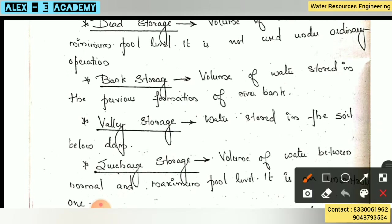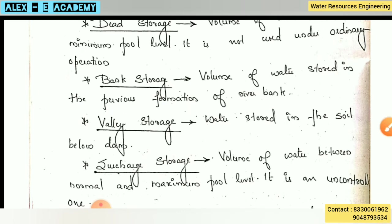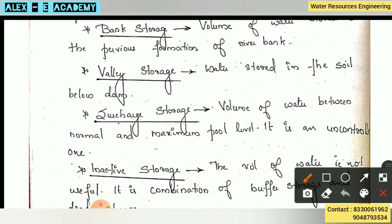Next is bank storage. The volume of water stored in the previous formation of the river bank — that is, the soil particles absorb the volume of water — that is the bank storage. Valley storage: the water stored in the soil below the dam. That is the water quantity stored in the valley — valley storage.